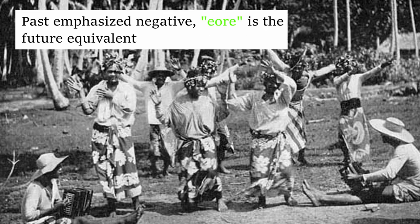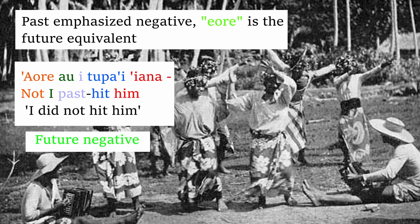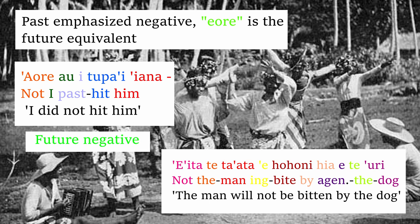In the past emphasized negative form, Aore is used. Aore means 'not,' vau means 'I,' e is the past marker, tupai is 'to hit,' and 'iana is 'him' — also some sort of object form. The future negative example: Aita te ta'ata e hohoni hia e te uri. Aita means 'not,' te is 'the,' ta'ata is 'man' or 'person,' e is the continuous marker, hohoni ia means 'to bite,' hia marks the agent, e is an agent-marking form, te is 'the,' and uri is 'dog.'